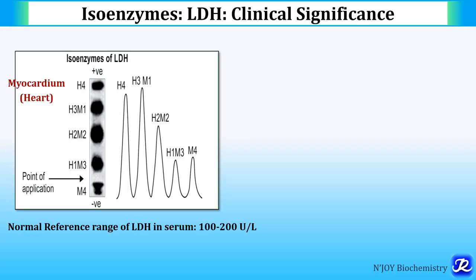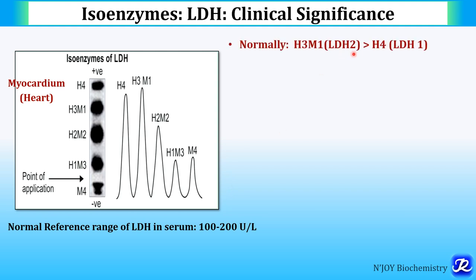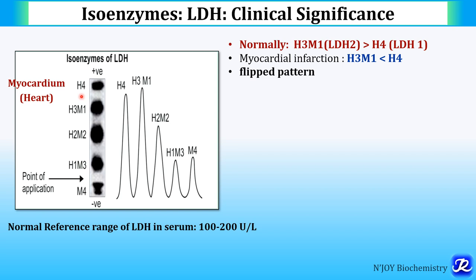The normal reference range of LDH in serum is 100 to 200 units per liter, though it may differ with different kits. LDH1 (H4) is present in the myocardium. Normally LDH2 is greater than LDH1, but in myocardial infarction there is an increased concentration of LDH1 compared to LDH2 — this reversal is called the flip pattern.